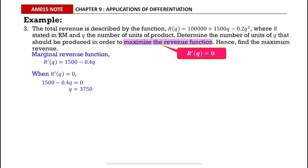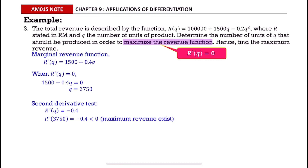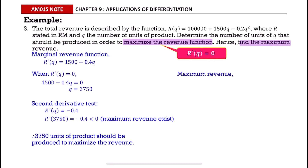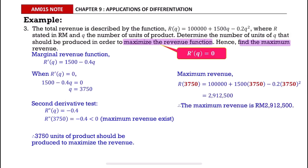The value of q is 3750. Using the second derivative test, we can prove that the maximum revenue exists at q = 3750. Therefore, 3750 units of product should be produced to maximize the revenue. Substituting 3750 into the revenue function gives the maximum revenue of RM 2,912,500.